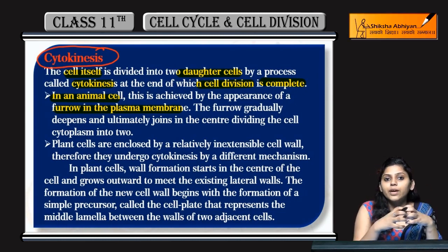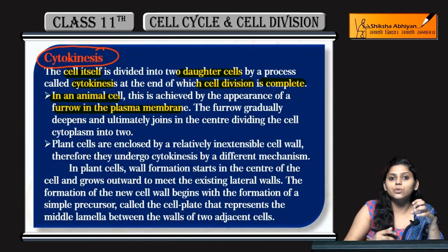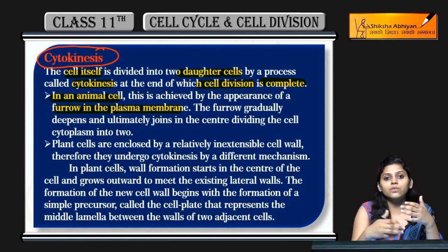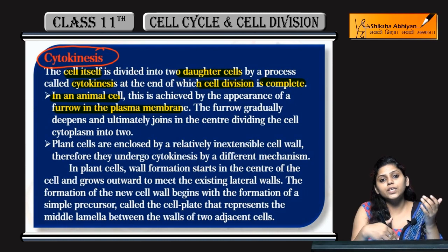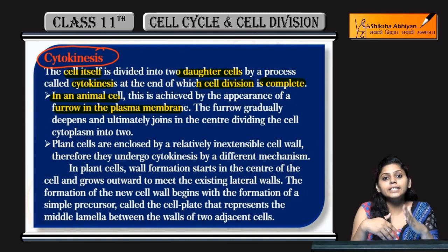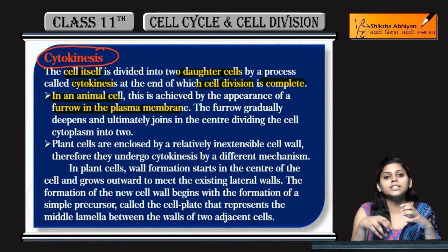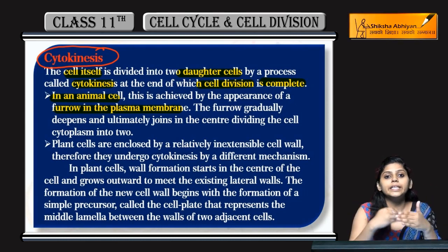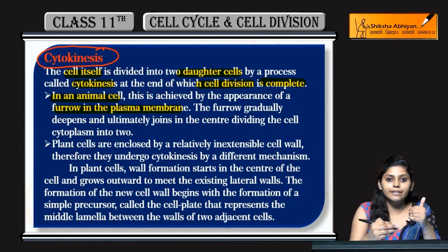So what happened in the complete cell cycle? Karyokinesis — nuclear division — includes prophase, metaphase, and anaphase. And then cytokinesis follows, resulting in two daughter cells. This is the complete cell division.